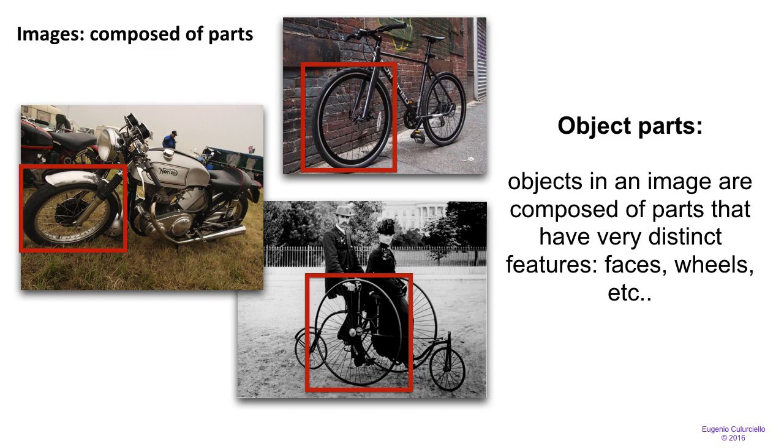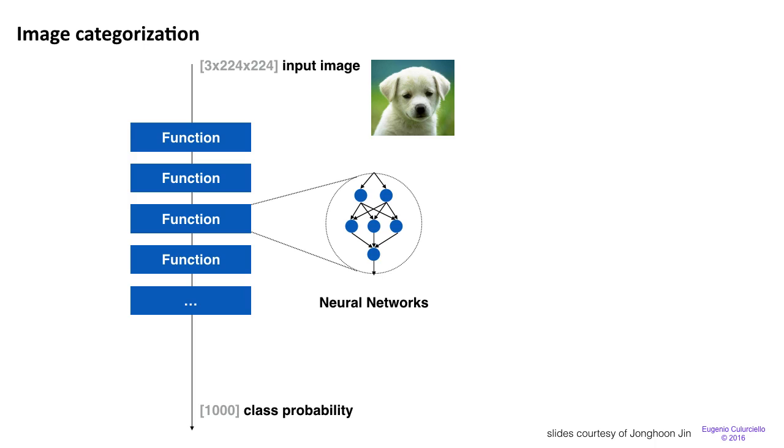So let's go back to our problem of image categorization. What we want to do, and we should do, is we need to break down the problem of understanding an image into a set of hierarchical functions, where each one of these is a neural network.